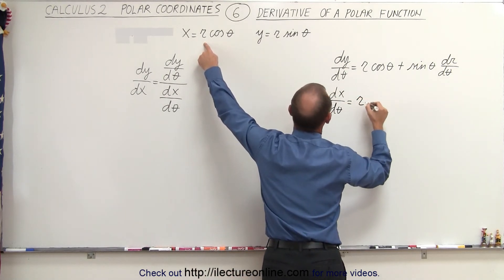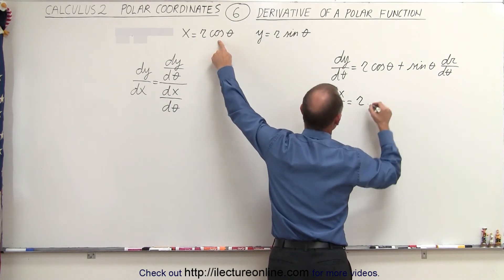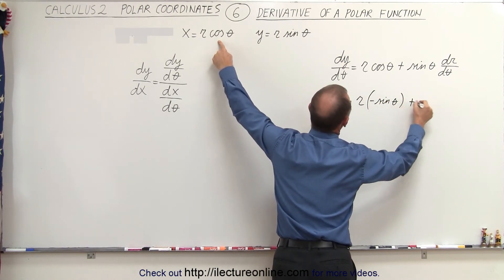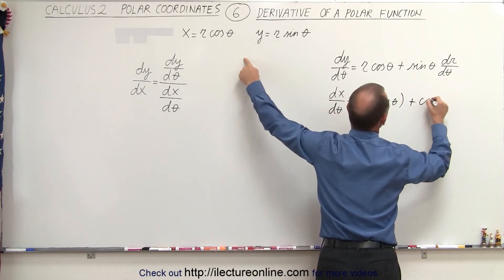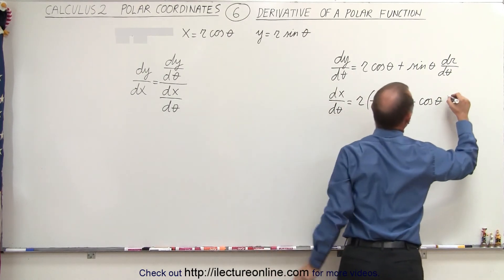times the derivative of the second. Now the derivative of the cosine is the negative sine, so minus the sine of theta, plus the second, which is the cosine of theta, times the derivative of the first, which is dr/dθ.